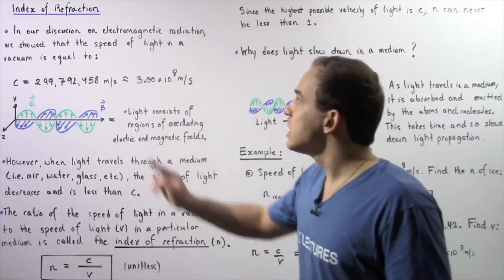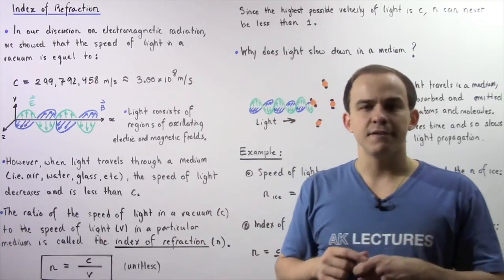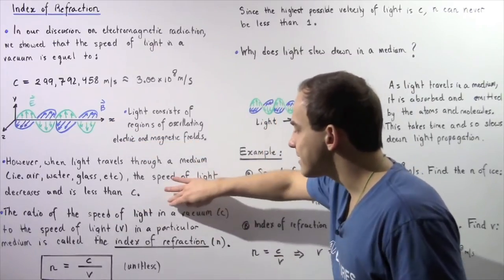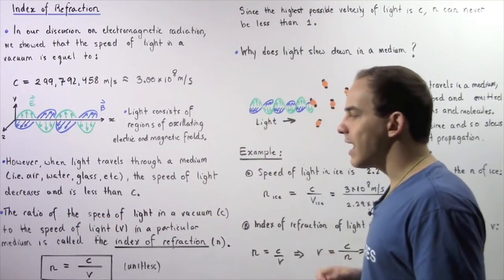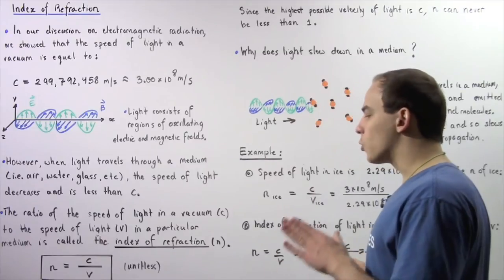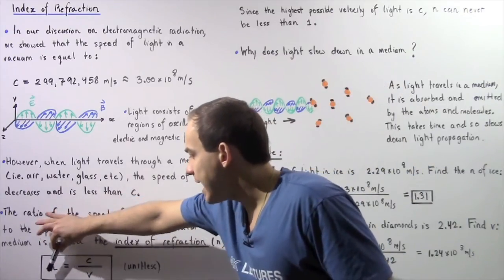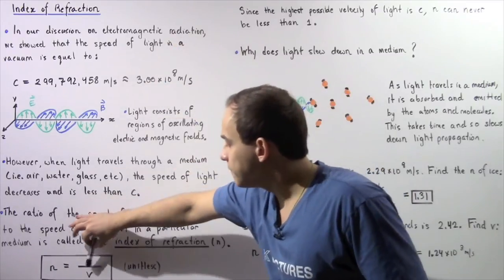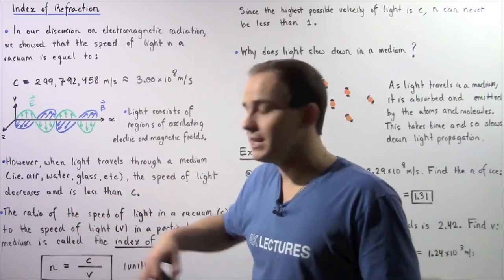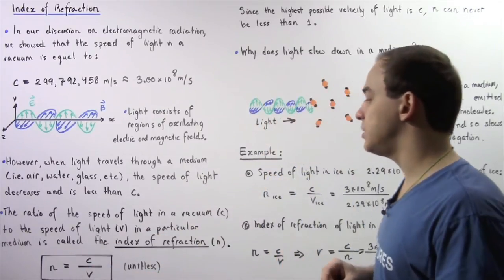We define something known as the index of refraction, which allows us to compare the speed of light inside a vacuum to the speed of light inside a medium. The ratio of c to v — the speed of light in a particular medium — is known as the index of refraction, given by lowercase n. So n equals c divided by v. Because we're dividing velocity by velocity, the index of refraction is unitless.